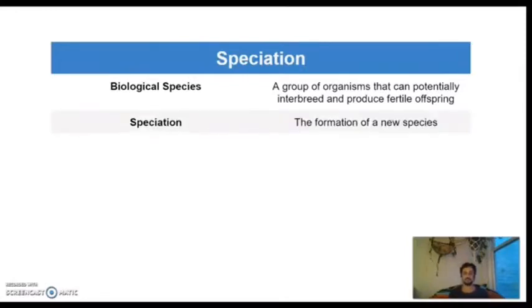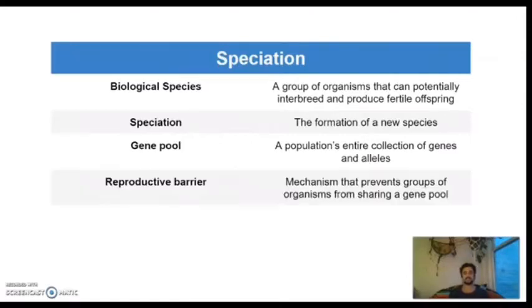Speciation is the formation of a new species. A gene pool is a population's entire collection of genes and alleles. A reproductive barrier is a mechanism that prevents a group of organisms from sharing a gene pool. And extinction. Extinction is the death of all of the individuals in a species.